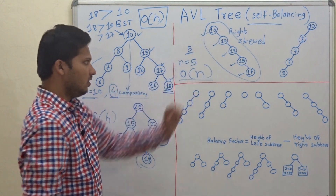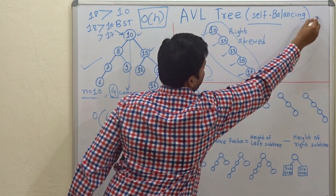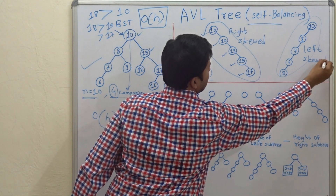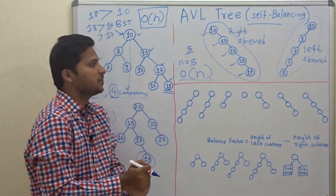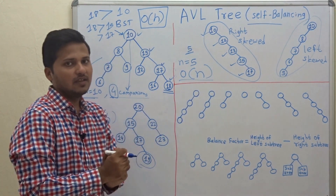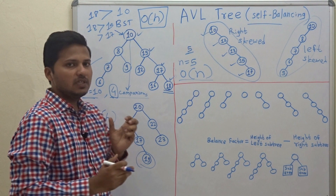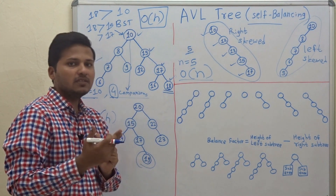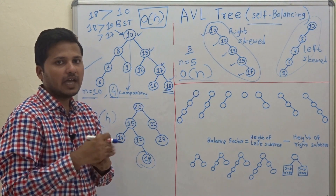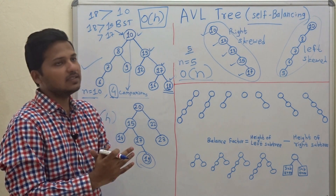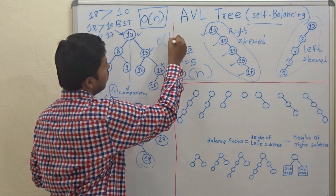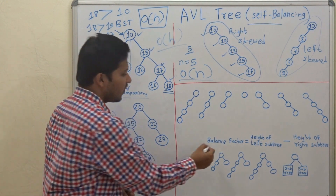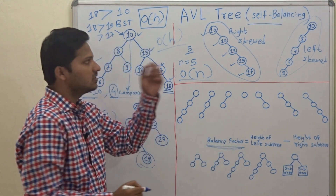We have to balance this right-skewed tree or this left-skewed binary search tree. This is called the left-skewed binary search tree. We have to write a program that will self-balance such trees so that searching an element always has time complexity O(h), the height of that binary tree.